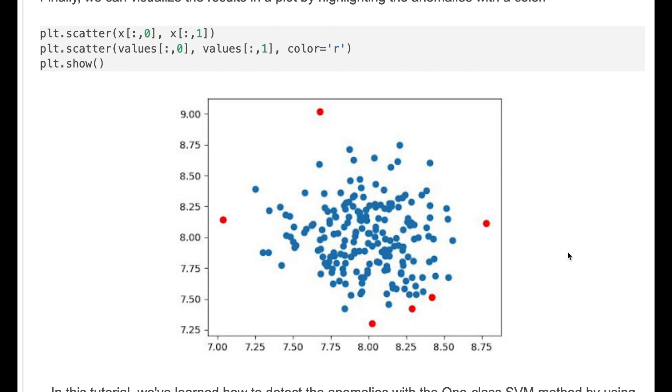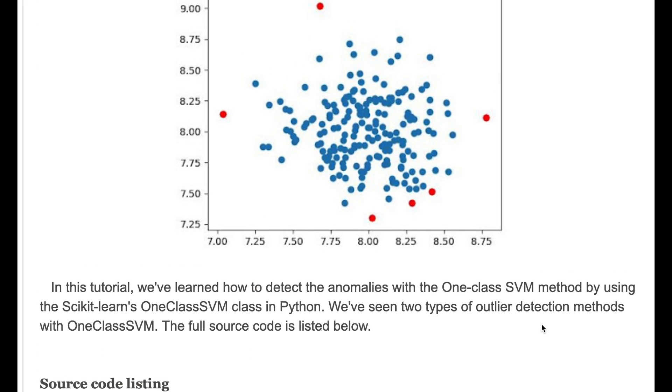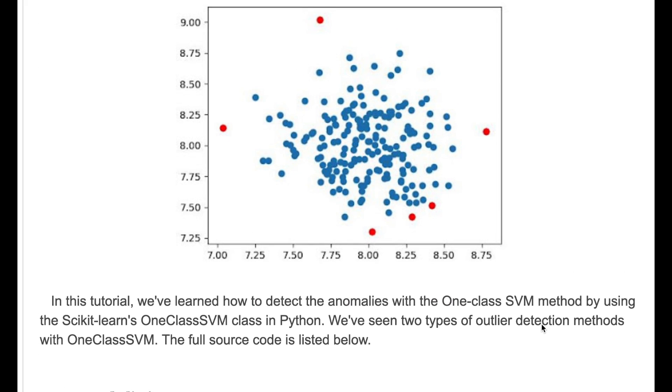The result shows that we have slightly different results here. We got here six anomaly points. And you can use any of the methods for your tests.